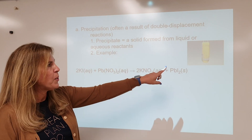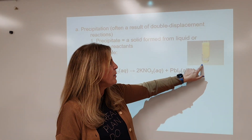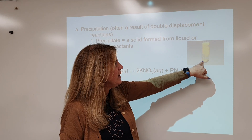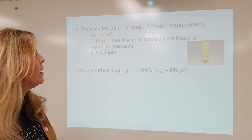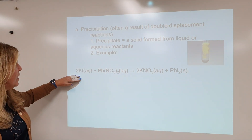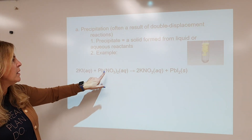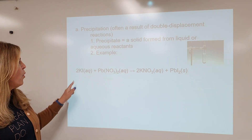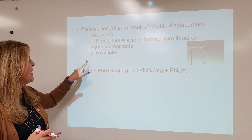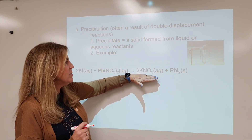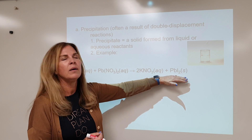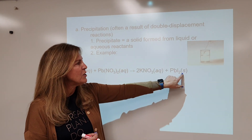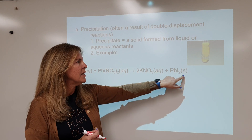Here's a great reaction. We have two clear liquids, and suddenly we get a beautiful yellow precipitate. This is a double displacement reaction: compound plus compound, aqueous, meaning dissolved in water. When potassium and lead trade partners, potassium is now with nitrate and lead is now with iodide. The potassium nitrate is still dissolved in water, and that yellow solid you see is our precipitate, lead iodide.